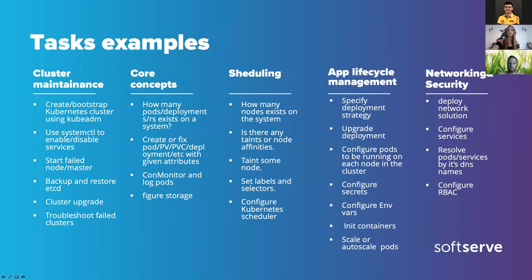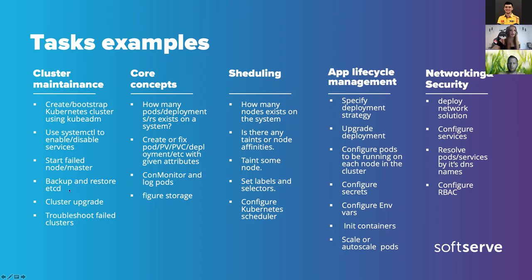Here are some task examples split by domain. For cluster architecture: tasks include bootstrapping a Kubernetes cluster using kubeadm. Simpler tasks might involve kubeadm not running on a node and using systemctl to enable or disable services. More complex tasks include fixing a failing node on a master. A very common task is backup and restore using etcd — done with etcdctl. Other tasks include performing a cluster upgrade and troubleshooting failed clusters.